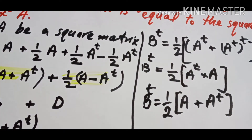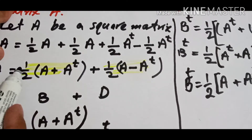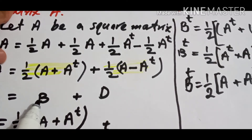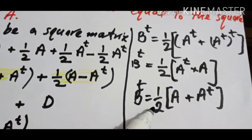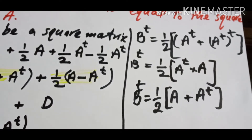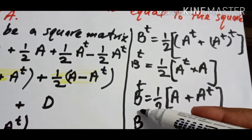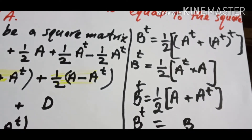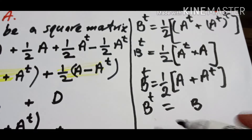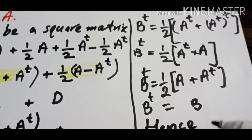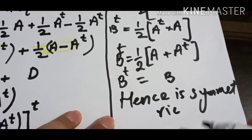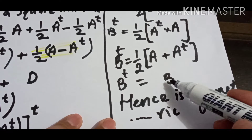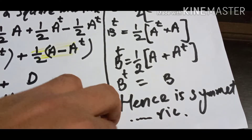We had previously defined B as ½(A + Aᵀ). Now we see that B transpose is equal to ½(A + Aᵀ), which is exactly the same expression. This means B transpose is equal to B. Hence, B matrix is symmetric — because a matrix is symmetric when its transpose equals itself.